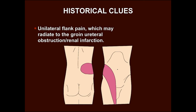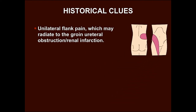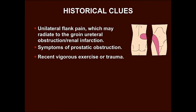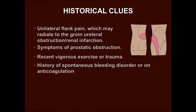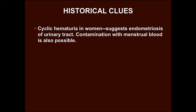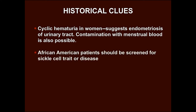Recent URI or skin infection might suggest post-streptococcal glomerulonephritis or IgA nephropathy. Positive family history of renal failure may indicate hereditary nephritis or polycystic kidney disease. Unilateral flank pain radiating to the groin indicates ureteral obstruction due to blood clot or calculus, or it can be due to renal infarction. Are there any symptoms of prostatic obstruction? Cyclic hematuria in women suggests endometriosis of the urinary tract. African-American patients should be screened for sickle cell trait or disease.